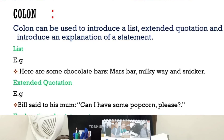The next one is the colon. A colon is two dots. Colons can be used to introduce a list, extended quotations, and to introduce an explanation of a statement. For example: 'Here are some chocolate bars:' — and then the list follows. For extended quotation, for example: 'Bill said to his mom, "Can I have some popcorn please?"'